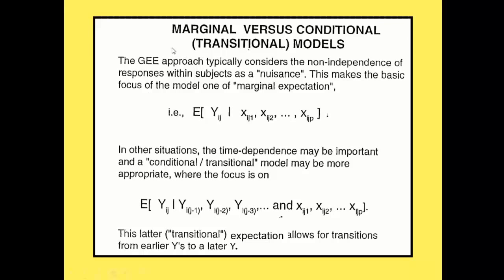The GEE approach typically considers non-independence of responses within subjects as a nuisance, making the basic focus of the model one on marginal expectation. Depending on the program, if you're using Glimmix you can also have random effects. So if you're doing the GEE approach you could have marginal, conditional, or even random effects models if your program allows for random effects.